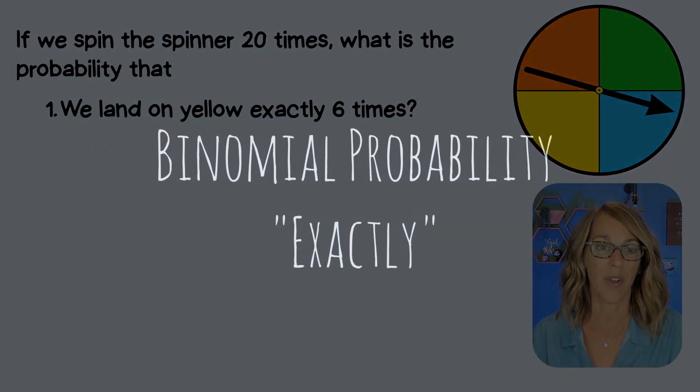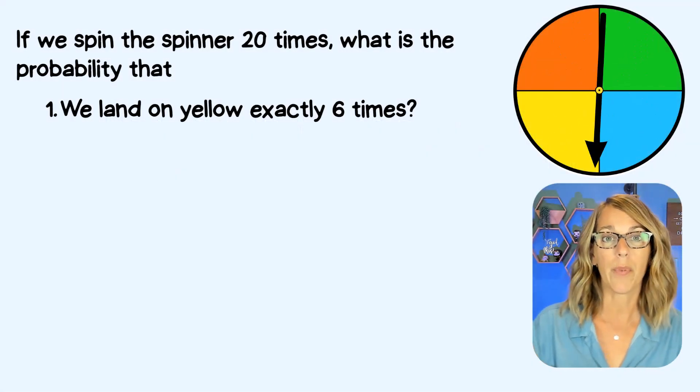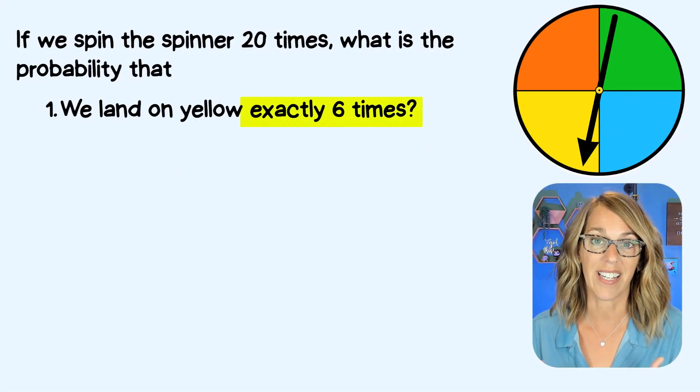We are going to get started with this first one. So we're going to spin the spinner 20 times. What is the probability that we land on yellow exactly six times?